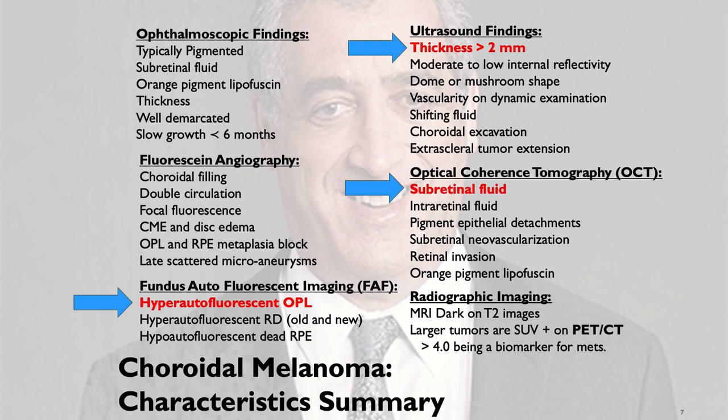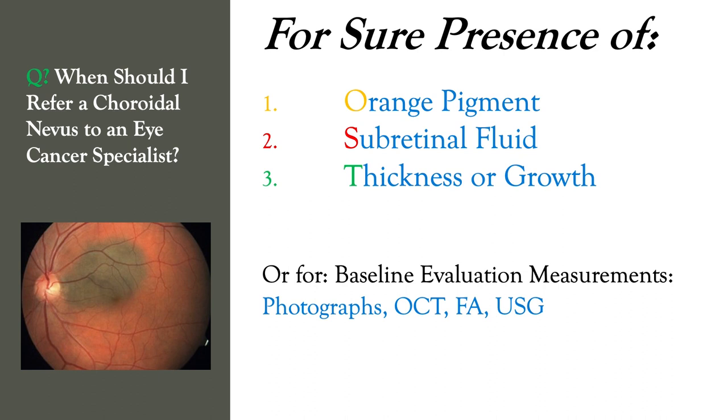As you see, there are many, many findings and many, many tests that can be used. I sat down and tried to write all the different characteristics of choroidal melanoma in this characteristic summary. So, moving on to the question: when should I refer a choroidal nevus to an eye cancer specialist?